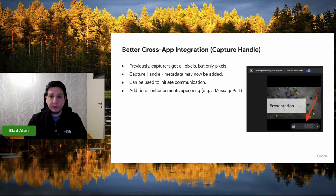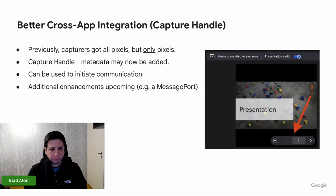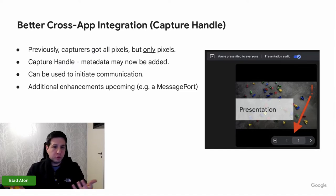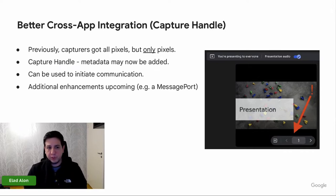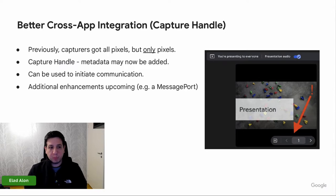We've introduced a couple of new APIs for better integration between capturing and captured applications. It's always possible for applications to communicate using existing mechanisms such as broadcast channel, shared worker, or shared cloud infrastructure. But the problem is that although the capturing application gets every single pixel from the captured application, it does not actually get any metadata. So it does not know what the origin of the captured application is, or if there is a session ID, it does not know that.